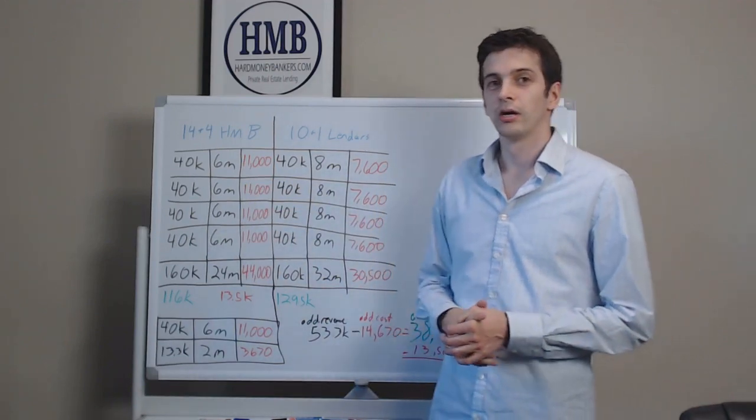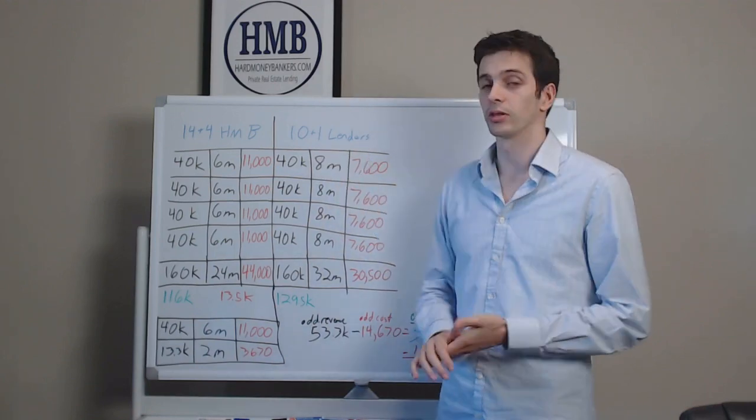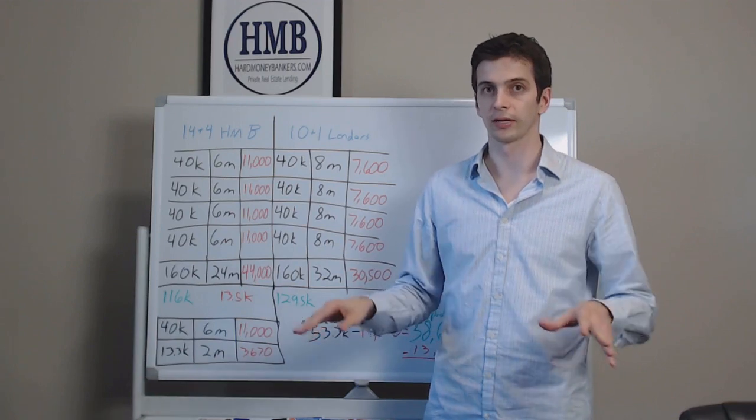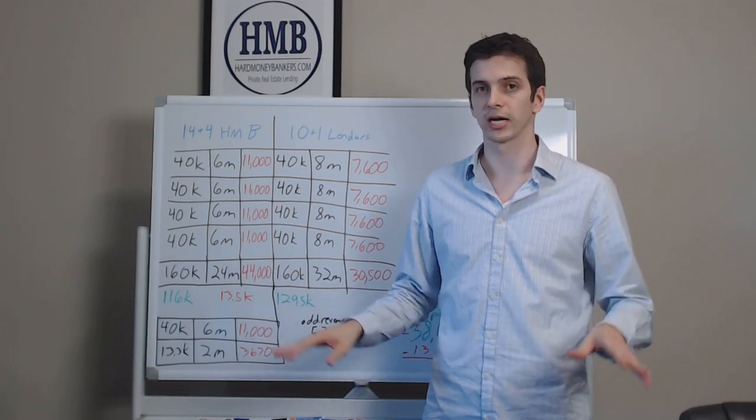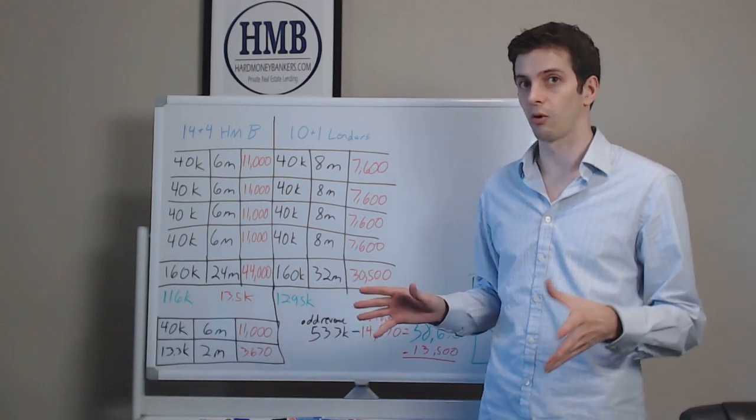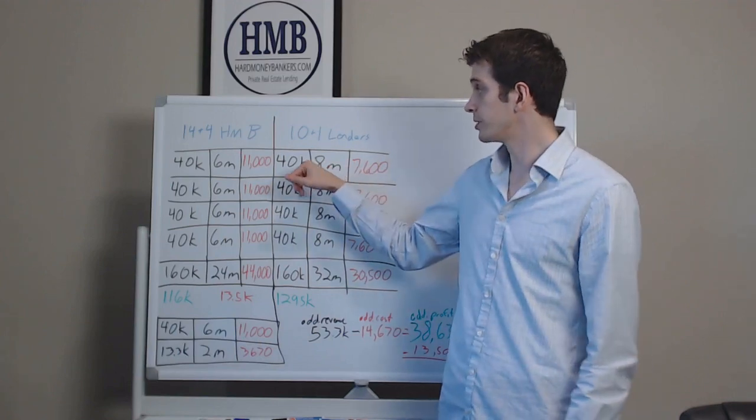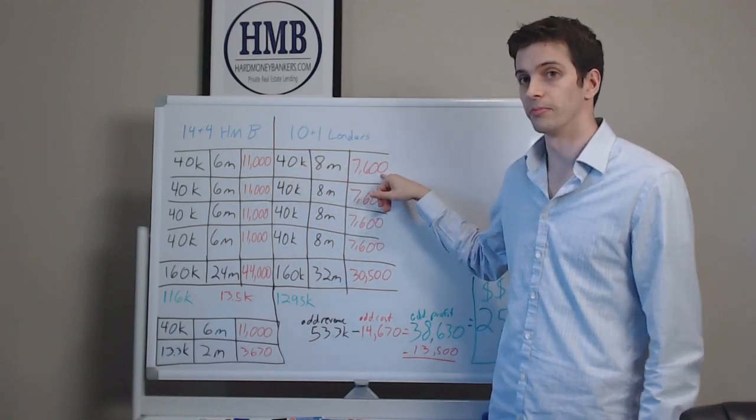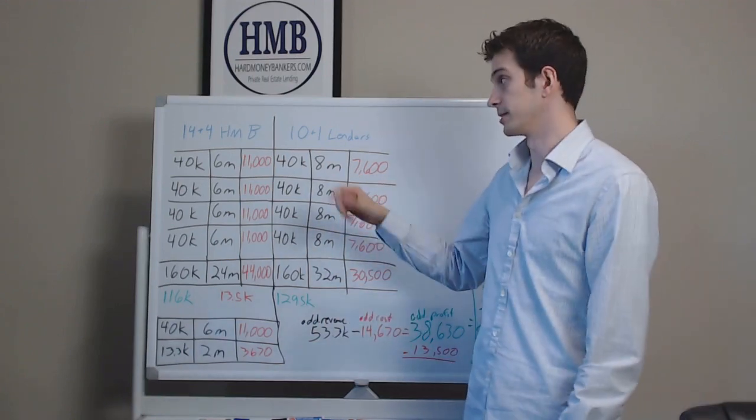Now, if you were qualified enough to get a 10 in 1 lender, which usually you can't get without years of experience and perfect credit and perfect documentation, but let's just say you are able to get it. You're still making $40,000 on the same flip, but your lender costs would be less. It would be $7,600 after eight months.